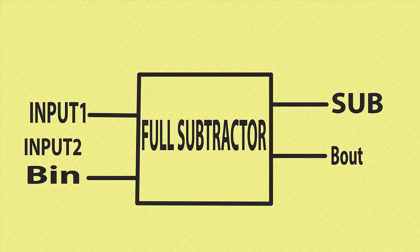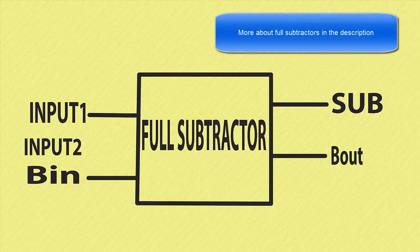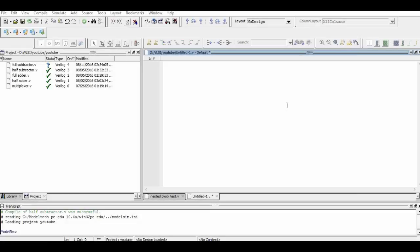Hello guys, today we are going to learn how to build a full subtractor using Verilog code. As you can see, a full subtractor has three inputs: input one, input two, and a previous borrow input. It also has two outputs: a subtract and a next borrow, or output borrow.